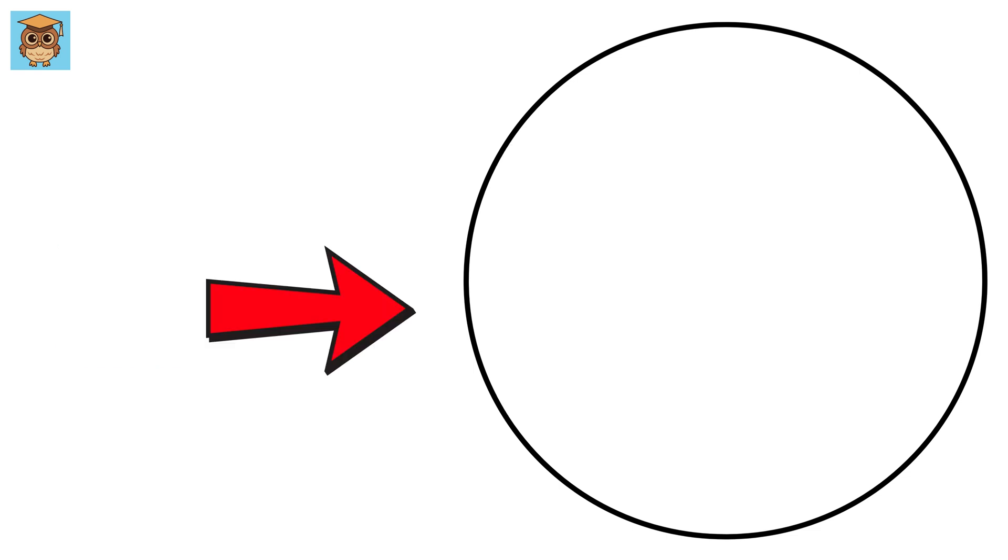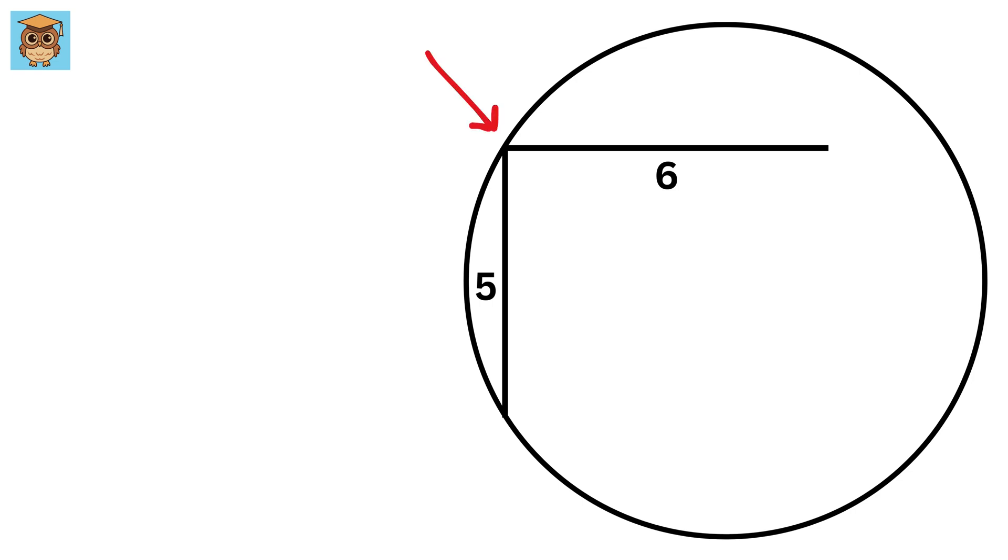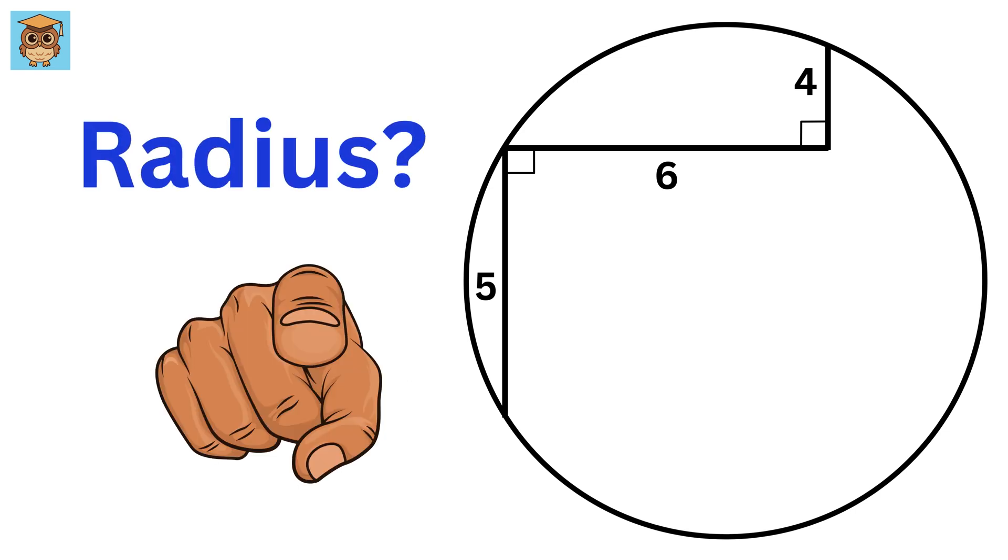We have a circle. First we draw this chord of length 5, and after that we draw this line of length 6 from this point, which is perpendicular to this chord, followed by another line which is perpendicular to this one, and it is of length 4. Now how can we use these details to determine the radius of this circle? Can you solve it?